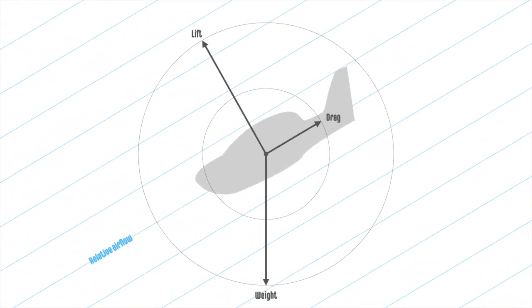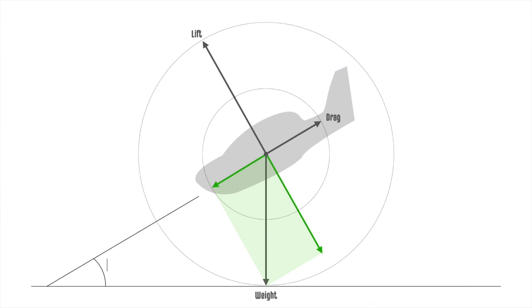In a descent, the flight path is now pointed towards the Earth, and the relative airflow opposes this flight path. The airplane is able to maintain its airspeed because a component of the weight force acts in the direction of the flight path. When the forward weight component is strong enough to counteract drag, the airspeed remains constant.